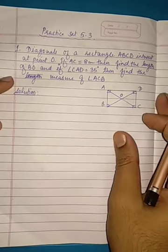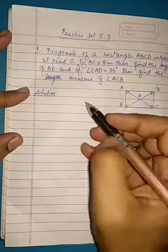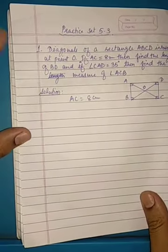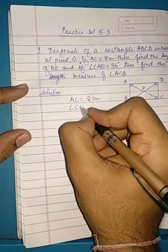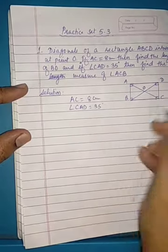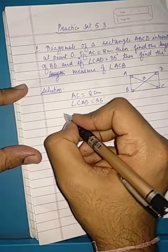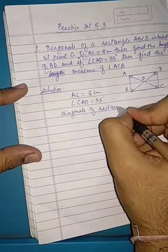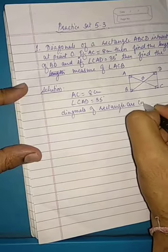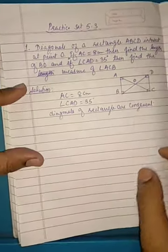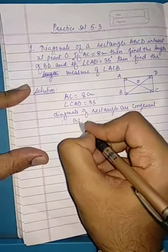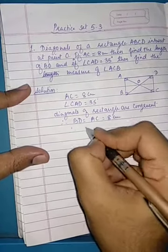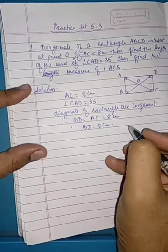First, what is given? We have AC equals 8 cm, and angle CAD is equal to 35 degrees. Now, diagonals of a rectangle are congruent. Using this property, we can write that BD is equal to AC, which equals 8 cm. So we have BD equals 8 cm.